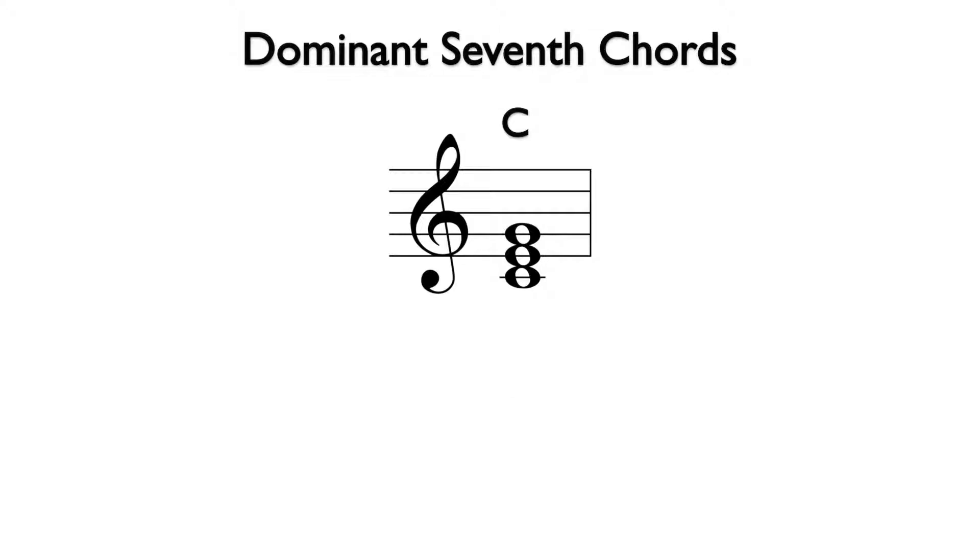Here we have a C major triad. C to E is a major third and E to G is a minor third. This is the formula for a major triad.